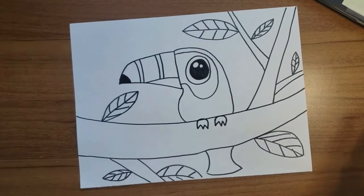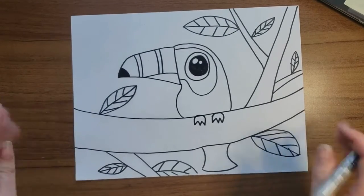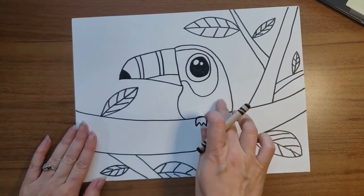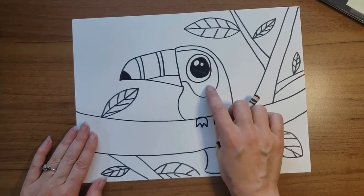What do you think? I really like the way mine looks, and now it's ready for color. I am going to start with a black crayon and I'm going to color the body of my toucan black. I'm going to leave his eye white.